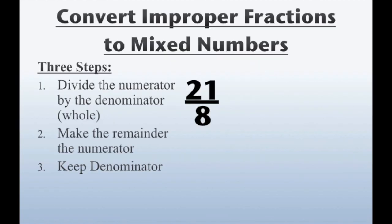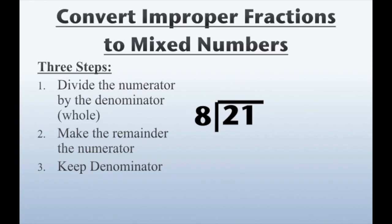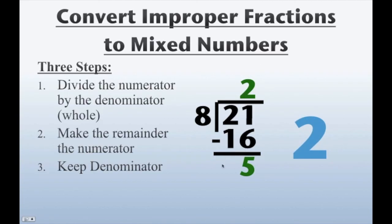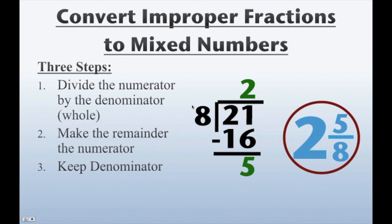How about 21 over 8? Step 1 is to divide the numerator by the denominator — that's going to give us the whole number of our mixed number. Let's change it to division notation. We'll bring 21 inside. 21 divided by 8 is 2 — 8 goes into 21 two times. 8 times 2 is 16. We subtract that, we get a remainder of 5. We have 2 as our whole number, 5 is our remainder so we're going to leave it as our numerator. And step 3, our denominator was 8, therefore it stays as 8. Our final answer is 2 and 5 eighths.